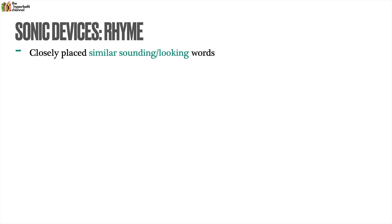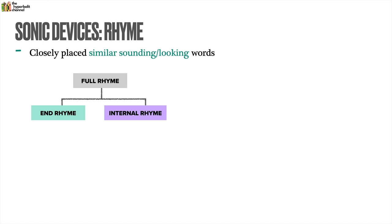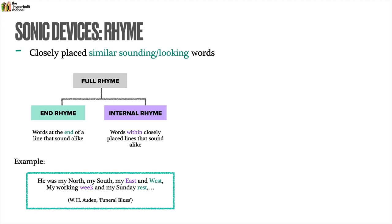Next up, we've got rhyme, which is actually a huge topic. On the whole, it means closely placed, similar-sounding or sometimes similar-looking words. There are two main types. First, full rhyme, which includes end rhymes — words at the end of a line that sound alike, the easiest sort to detect — and internal rhymes, which are words within closely placed lines that sound alike, embedded within the lines. An example from Auden's 'Funeral Blues': 'He was my north, my south, my east and west, my working week and my Sunday rest.' Here, west and rest are end rhymes, while east and week are internal rhymes within their respective lines.